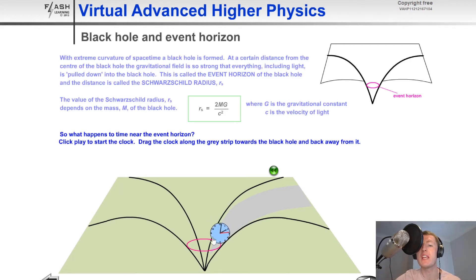But then if we bring it right into the event horizon, you'll notice that time appears to be frozen. And then if we move it back away again, you'll notice that time moves normally again.